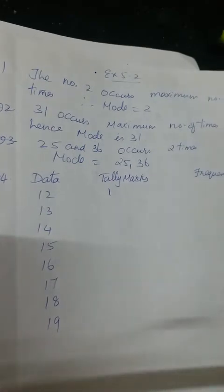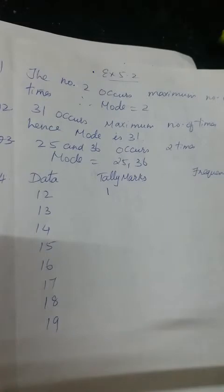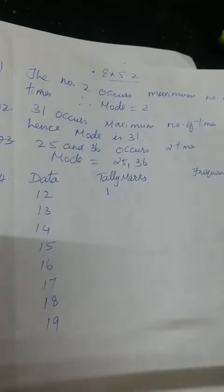Now exercise 5.2 — the first one says find the mode of the following data. So many numbers are given. From those numbers you see which number is repeating maximum number of times. When you see the number 2, see how many times it is coming — 1, 2, 3, 4, 5. So 2 is repeating 5 times.